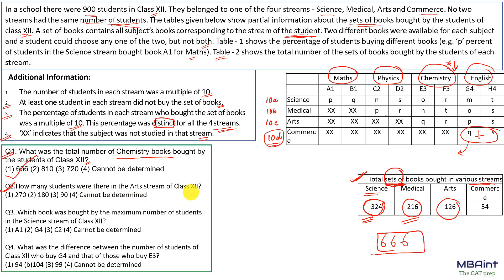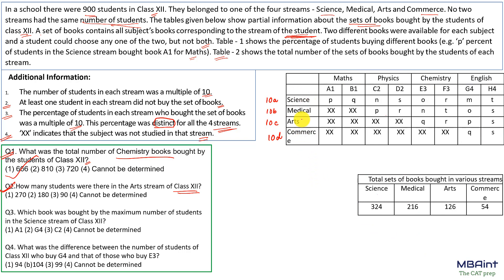Question two asks how many students were there in the art stream of class 12. We need to find the value of 10C, so we need to find C. We have four streams with percentages of students buying books denoted as 10W%, 10X%, 10Y%, and 10Z% for science, medical, arts, and commerce respectively.